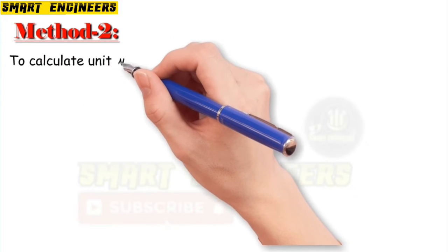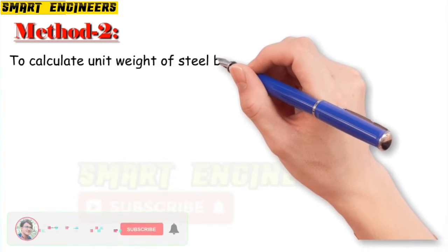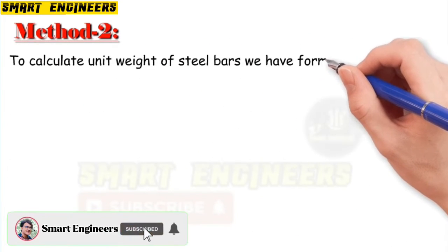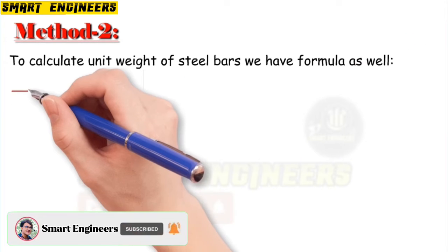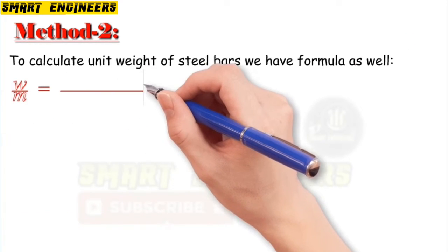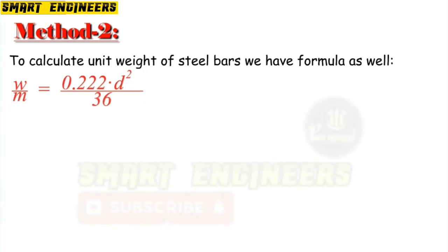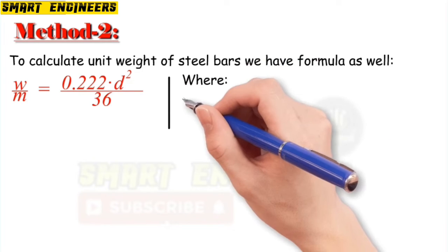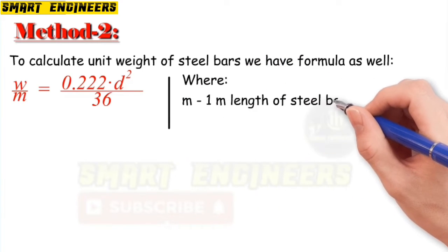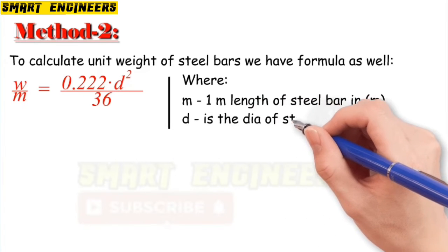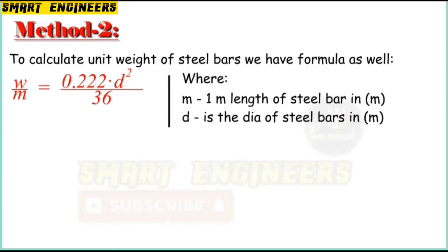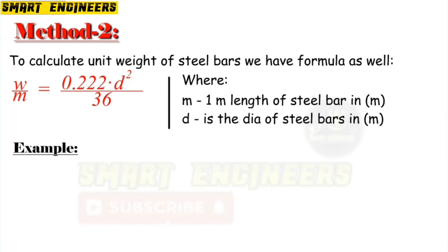Method two. To calculate the unit weight of steel bars, we have the formula: W/m = 0.222 × D² / 36. We can calculate W from here, where m is one meter length of steel bar and D is the diameter of steel bar in meters. To understand better, let's follow another example.